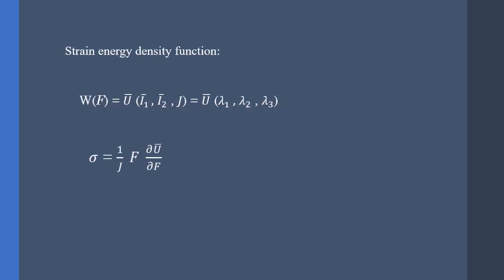We know that these materials are formulated using the strain energy density function, which is a TL or total Lagrangian formulation. It is based on the first and second invariants of the left or right Cauchy-Green strain tensor and the determinant of the deformation gradient tensor. It can also be formulated using the principal stretches. However, we mostly use the form which is based on the left Cauchy-Green strain tensor.